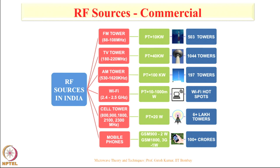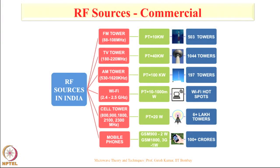Then we have cell towers. In India we have several technologies: 800 MHz which is basically CDMA, 900 MHz is GSM 900, then GSM 1800, 3G, and 4G. In India, operators are allowed to transmit 20 watts of power, with an extra concession given to 4G operators who can transmit up to 40 watts. We have more than 6 lakh towers in India. Almost all people today have mobile phones. Depending on the technology, 2 watts is allowed for GSM 900, and generally 1 watt for GSM 1800, 3G, and 4G.